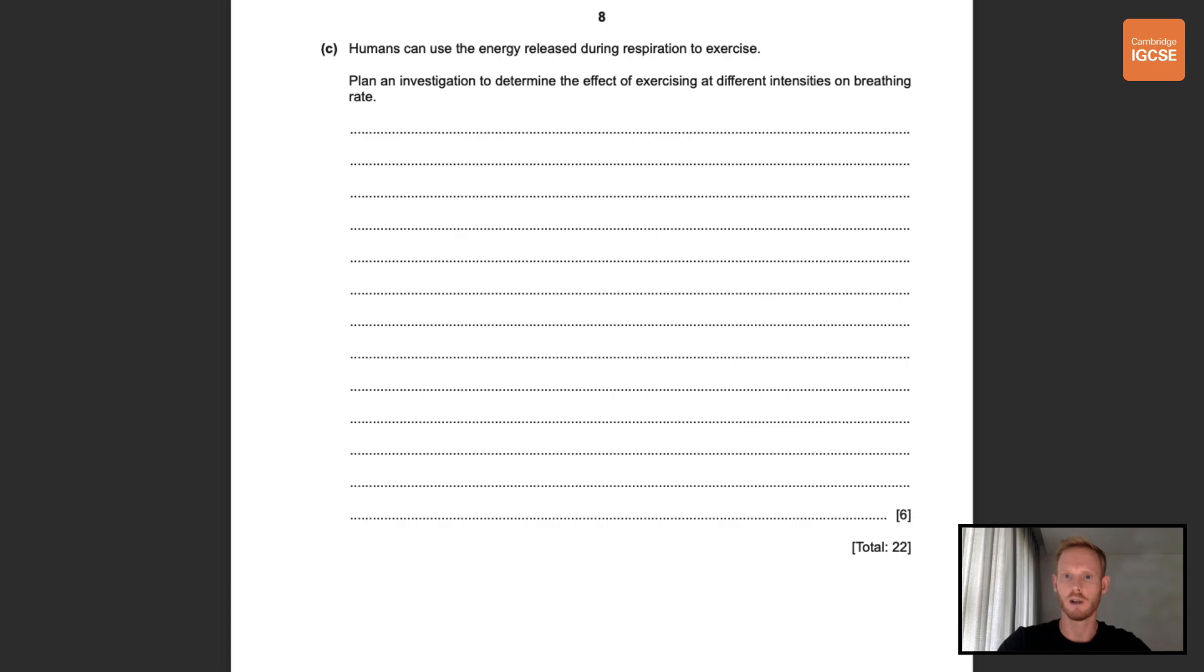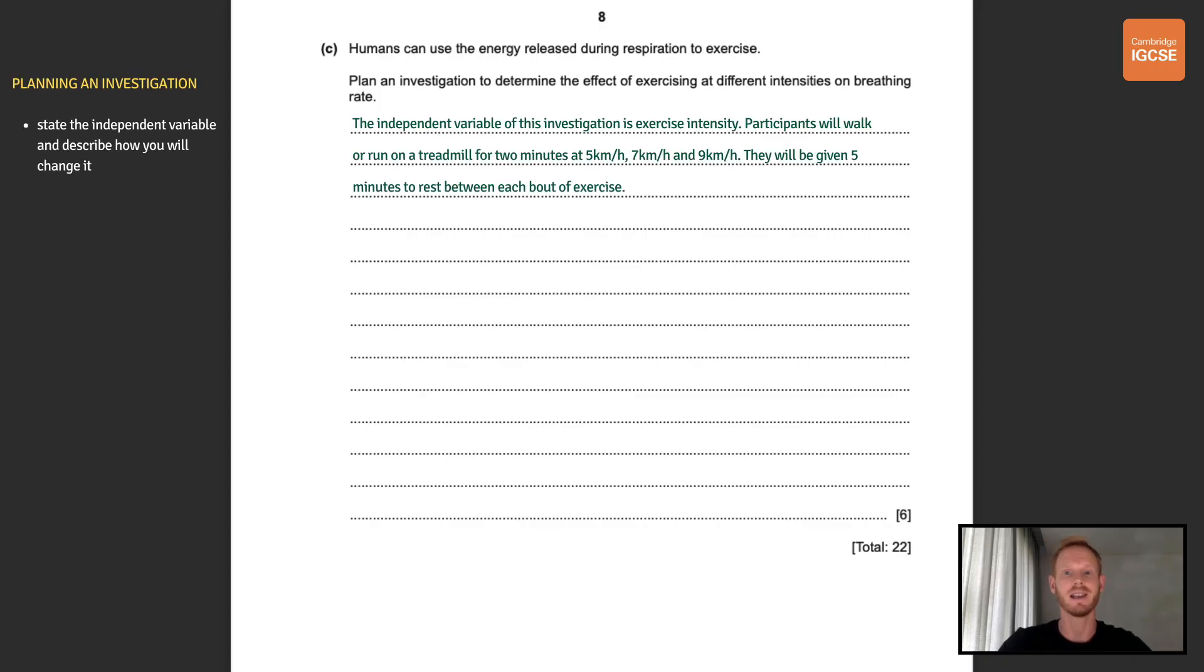Now onto part C. Humans can use the energy released during respiration to exercise. Plan an investigation to determine the effect of exercising at different intensities on breathing rate. So how to plan an investigation? Well the first mark's going to come from stating the independent variable, the variable that you will be manipulating and observing the effects of. The independent variable of this investigation is exercise intensity. Participants will walk or run on a treadmill for two minutes at five kilometers an hour, seven kilometers an hour, and nine kilometers an hour. They will be given five minutes of rest between each bout of exercise. So here I'm stating my independent variable and then being specific about how I'm going to change it.